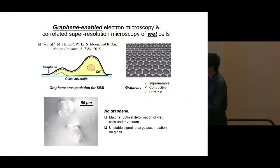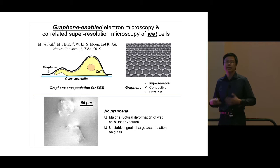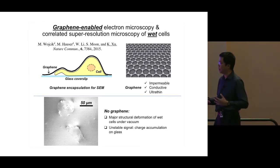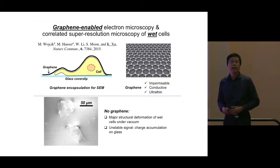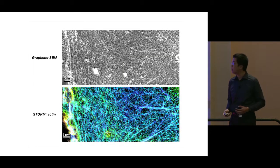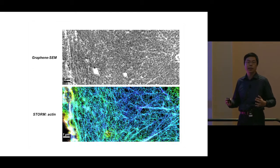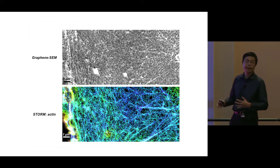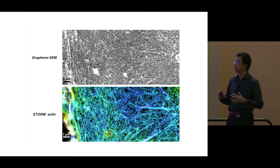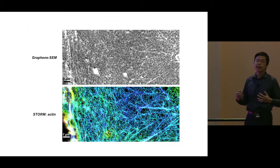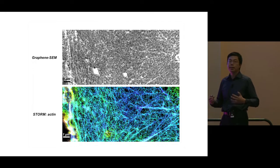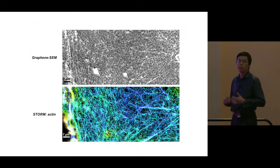Without graphene, cells on a coverslip under SEM show two major problems: the structures are distorted because cells don't survive the vacuum and explode, and we see unstable signal due to charging from the non-conductive glass. In contrast, when we cover the cell with graphene and do SEM again, we get very different results — high-resolution images with no charging and all internal structural details well preserved. We can see the cytoskeleton and resolve all fine filaments, and we can readily correlate those results with super-resolution microscopy since both are done in the liquid state.